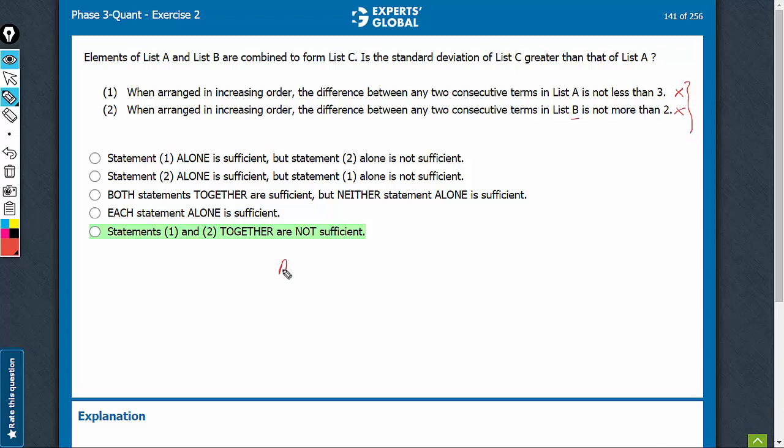list A has terms a bit far away. Any two terms are not less than three places away from each other, for example, 1, 5, 9, 15, 20, something like this, and list B has the terms nearby, something like 1, 2, 4, 5, 7, 9, 10, something like this.